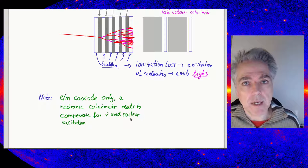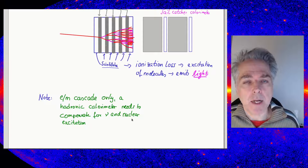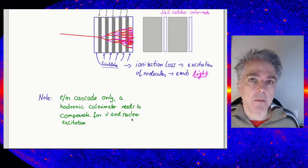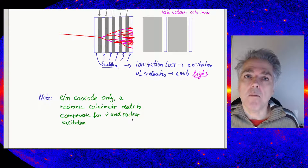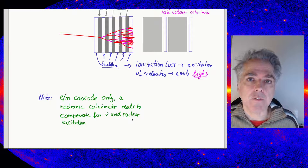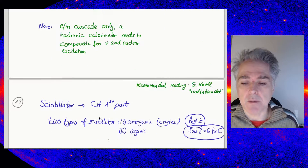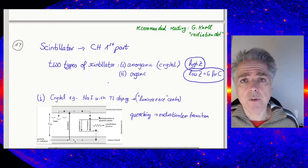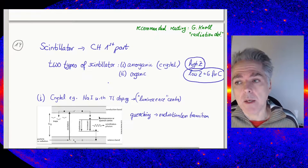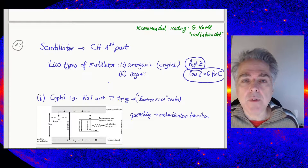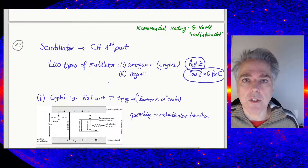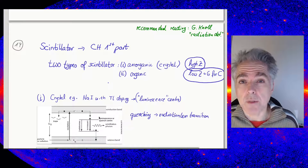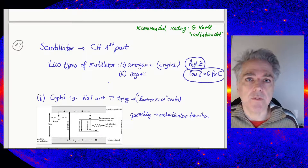The overall idea remains the same: measure a number of particles and find ways to account for losses, such as capturing muons or carefully calibrating invisible energy losses. Now let's talk about how scintillators work. There was some mention in the first part of the course, but let's go through the relevant materials and their differences.